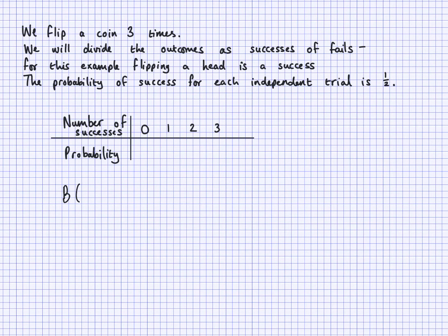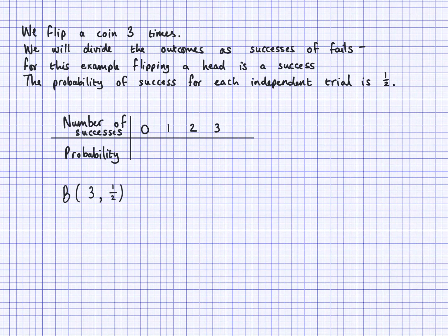The notation we use is B(n, p), where n is the number of trials — here three — and p is the probability of getting heads in each trial, which is 1/2. So this table is described as B(3, 1/2). This function is available in some calculators and software, making it easy to find these probabilities quickly. For example, the probability of two heads is found in the corresponding position in this table.